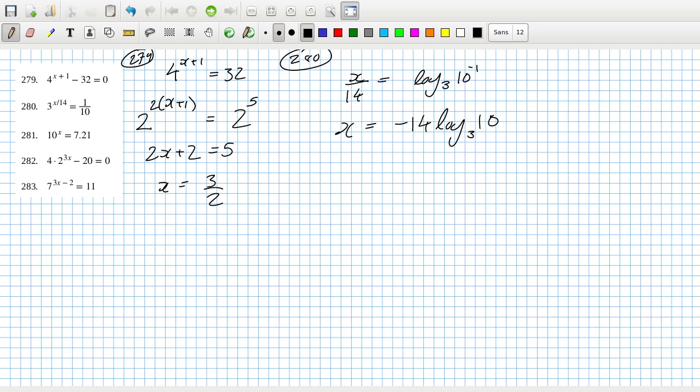281, well that's just x equals log base 10 of 7.21. Not much I can do with that really. Yeah, that's just how the answer is. 282, I can say two power 3x equals 20 over four, which is five, which means 3x equals log base two of five, which means x is one third log base two of five. That's about 0.7, by the way.